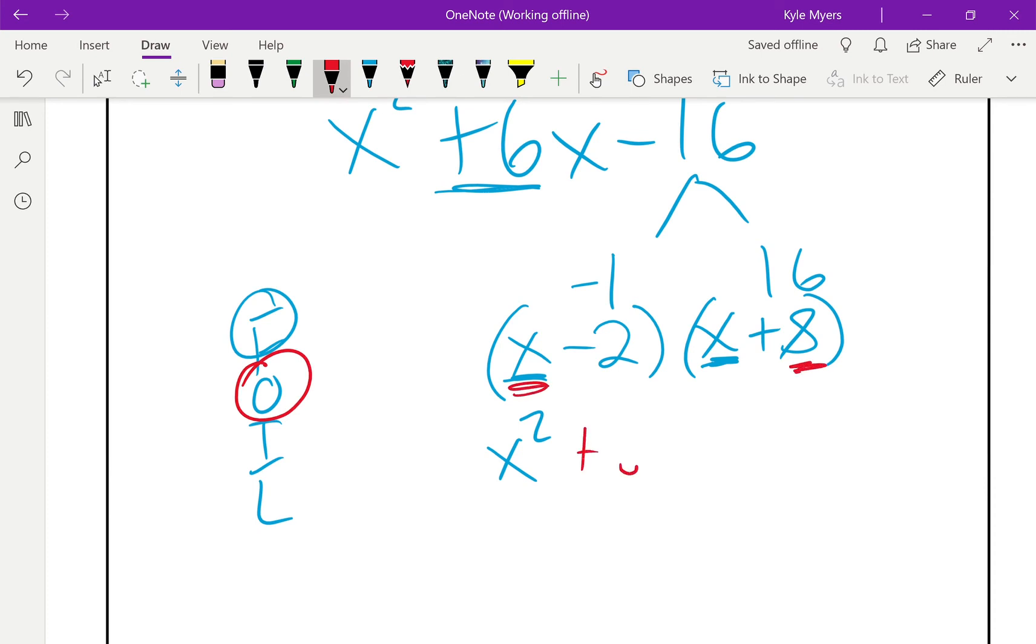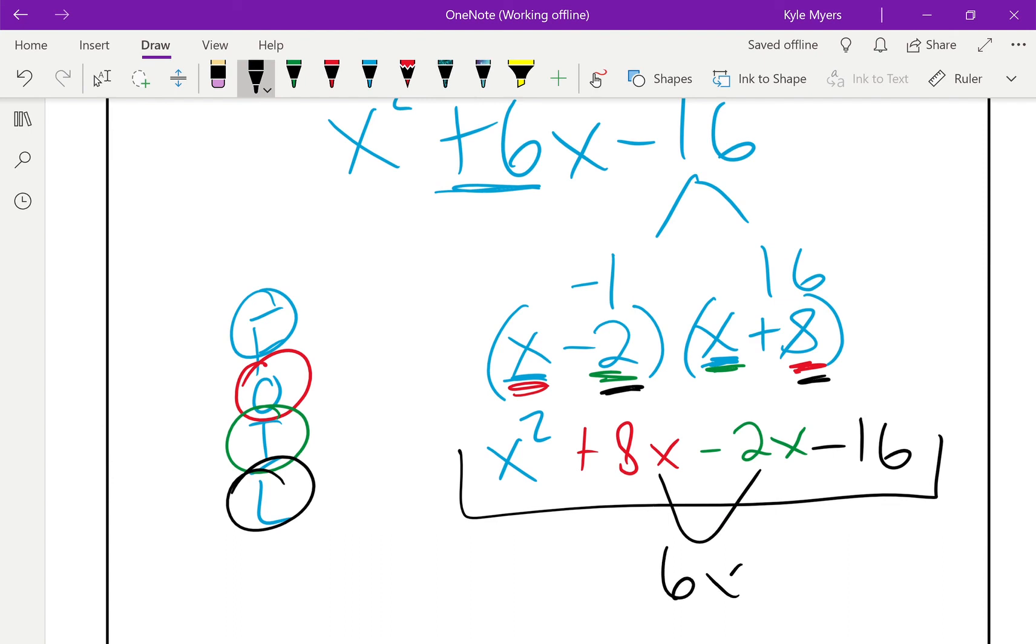And then inner times the inner, so minus 2x. And then last times last, last times the last, so minus 16. And then I put them all together. All right, these two go together and they give me 6x. That just drops down, that just drops down, and there we go. I know it works because I tried it out and I've checked it and it's all good to go. Peace out.